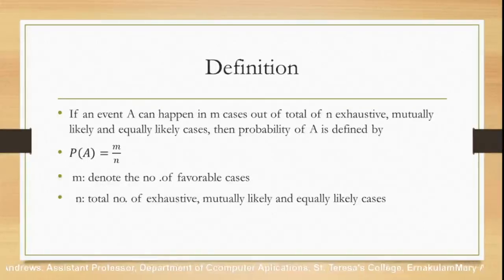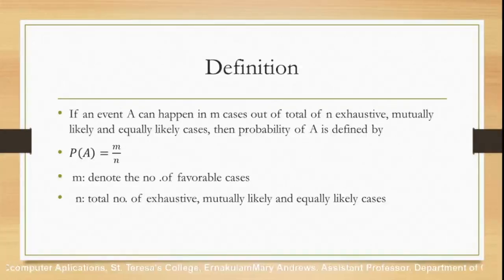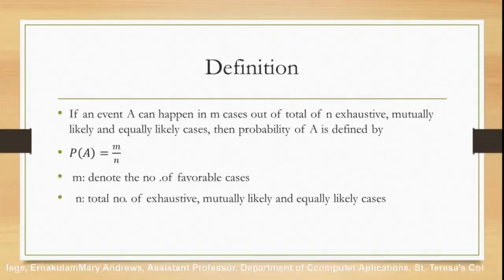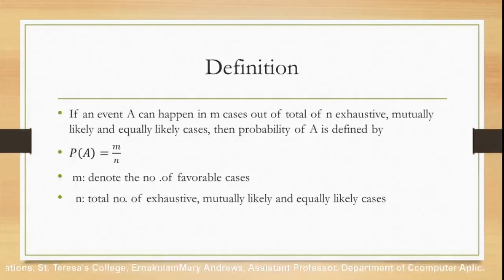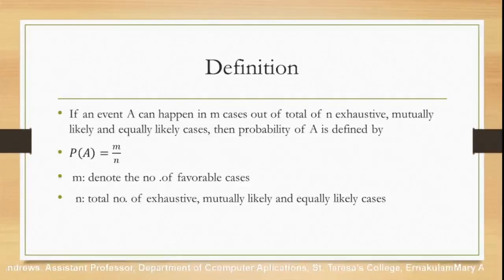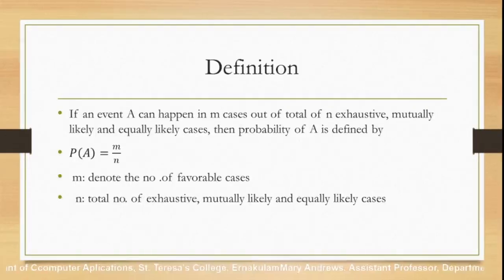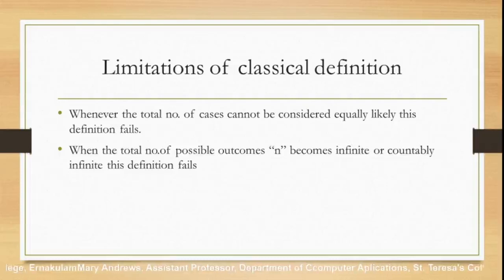Now compare this example with the formal definition. The classical definition of probability states: if an event A can happen in m cases out of a total of n exhaustive, mutually exclusive, and equally likely cases, then the probability of A is defined as P(A) = m/n, where m is the number of favorable cases and n is the total number of exhaustive, mutually exclusive, and equally likely cases.